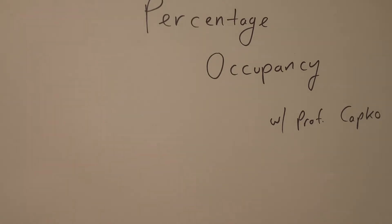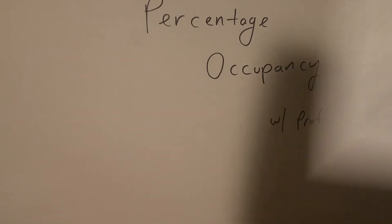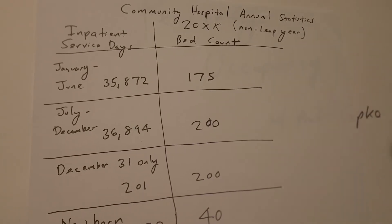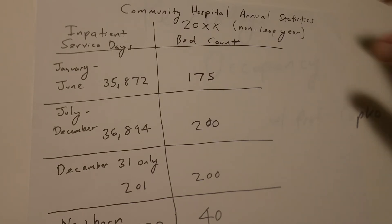Here is the data that we're going to be using today to make those calculations. This is community hospital annual statistics for a fictional year that is not a leap year. A leap year would have 366 days; a regular year would have 365 days. So we're going to make our calculations based upon a 365-day year.